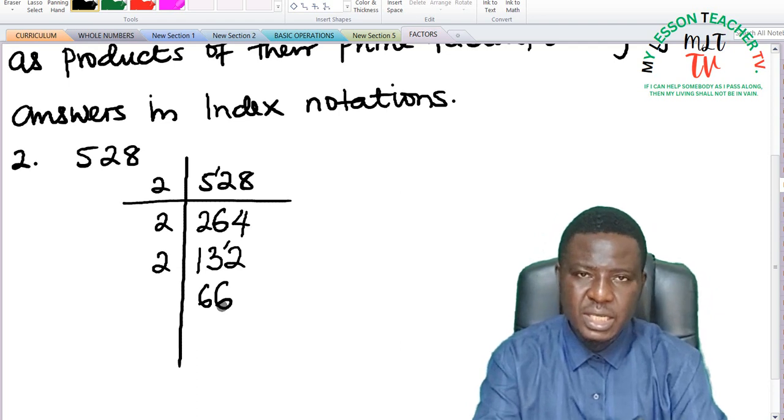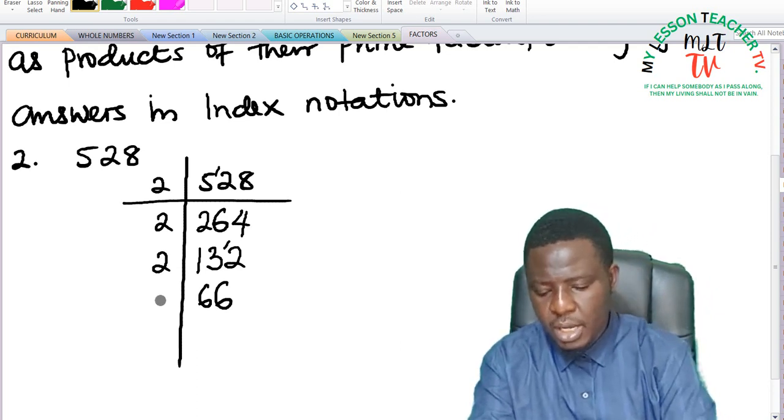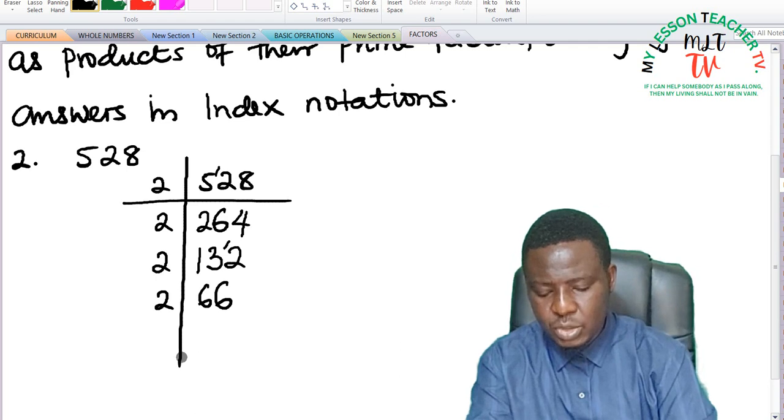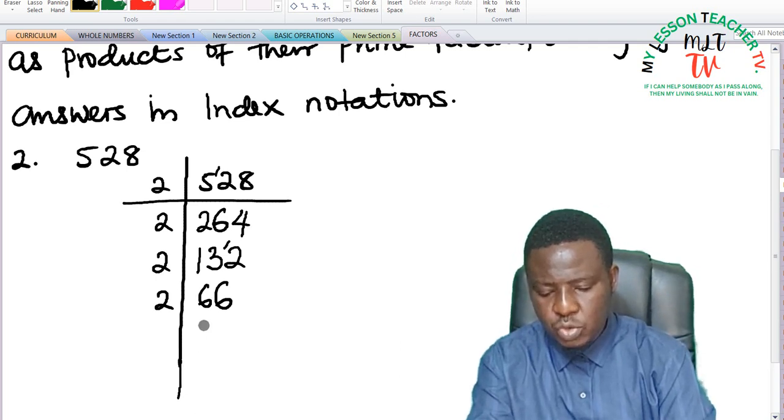66 is also not a prime number, so I'll divide by 2 again since 2 can still divide. 2 into 6 is 3, and this is 3. We get 33.